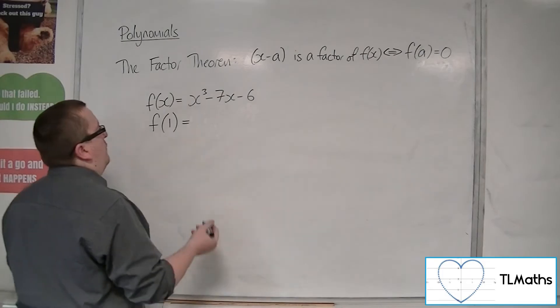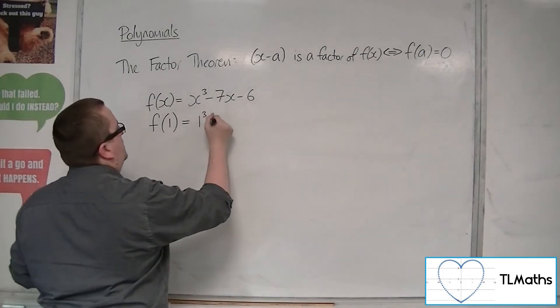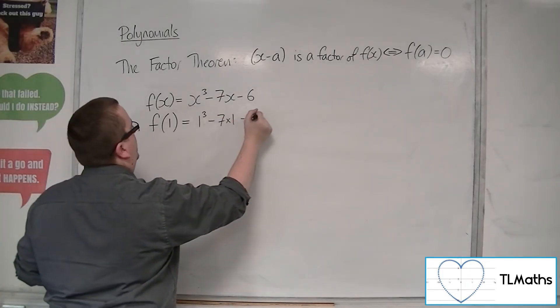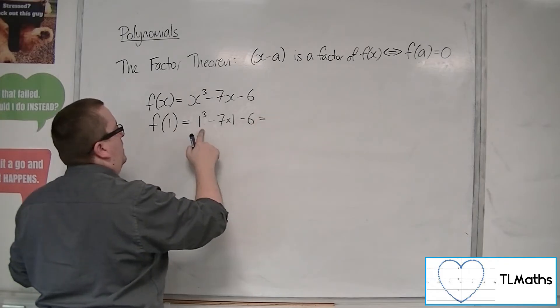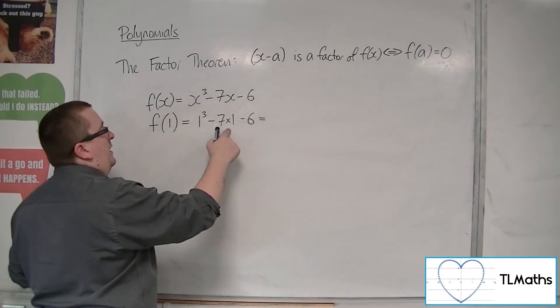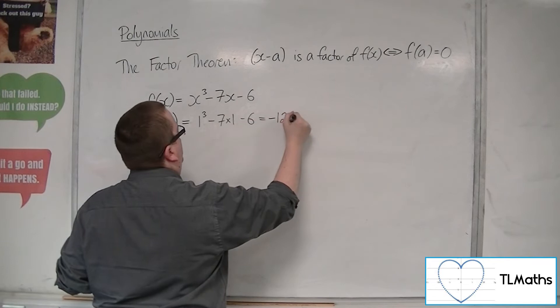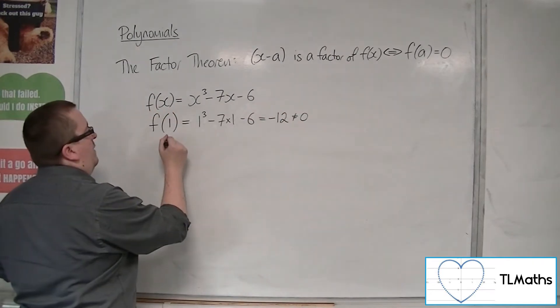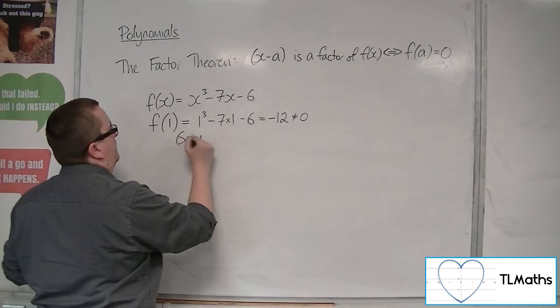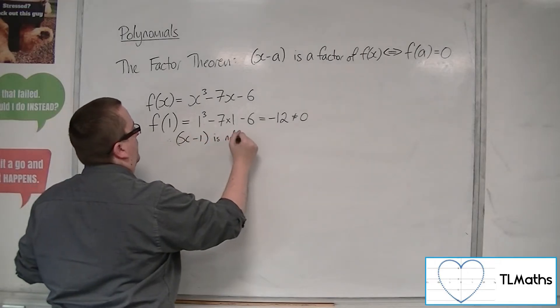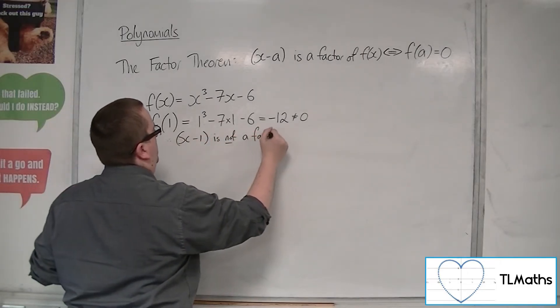So if I try f of 1, I get 1 cubed, take away 7 lots of 1, take away 6. 1 take 7 is minus 6, take away 6 is minus 12. That's not 0. So therefore, x minus 1 is not a factor of f of x.